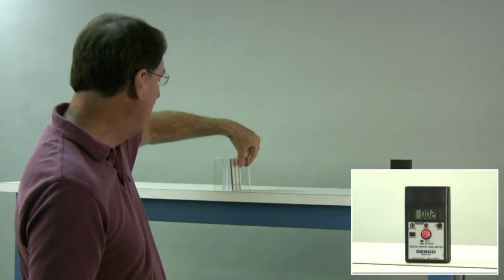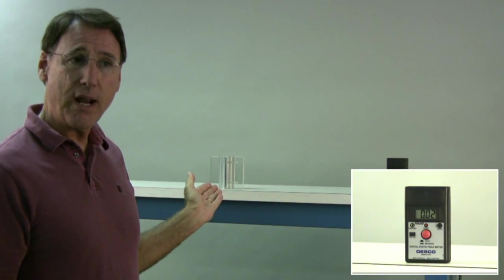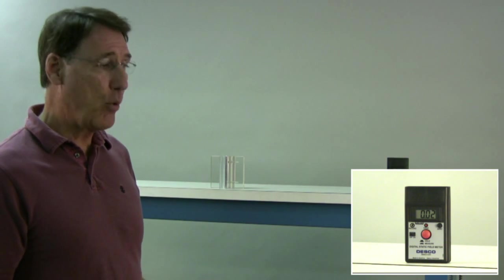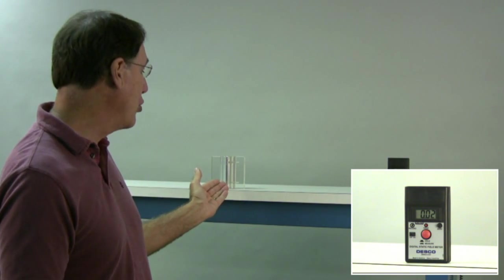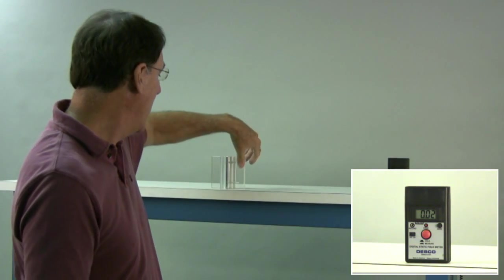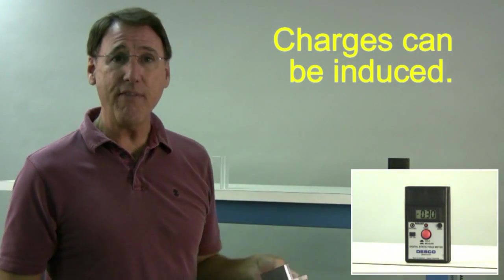I'm going to just put it in proximity. This is inducing a charge. The insulator has a big charge on it, even though we've just removed the charge from the conductor. Here I have it in close proximity, it's not touching, and let's see if the charge has been induced on it. So we have over a thousand volts on that.